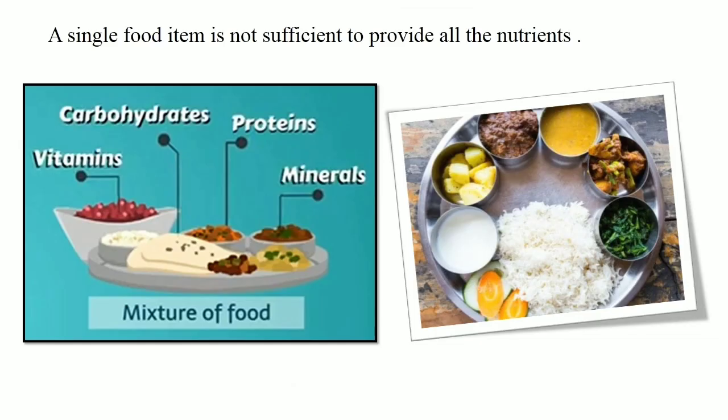A single food item is not sufficient to provide all the nutrients. In order to have all the nutrients, we have to take a mixture of food items, each of which is rich in and sufficient for a particular nutrient. So now you understand why your meal consists of so much variety — so that our body can get all the essential nutrients.